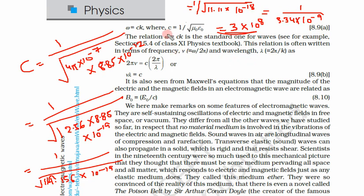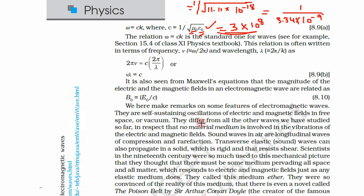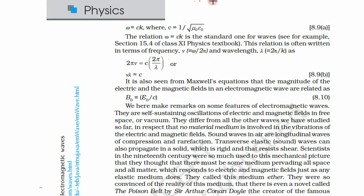In vacuum, these are the permeability and permittivity for vacuum. So electromagnetic waves travel in vacuum with the speed of light. The proof of this equation is not in our course; we have just assumed this is true. The speed of electromagnetic waves in vacuum is equal to the speed of light.